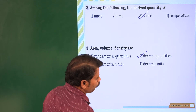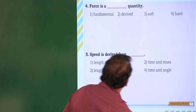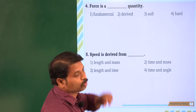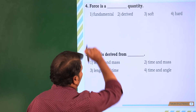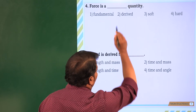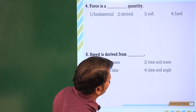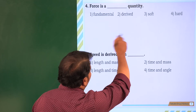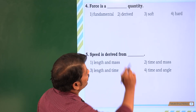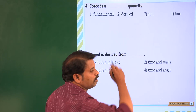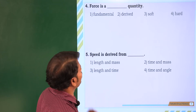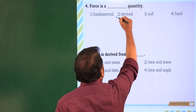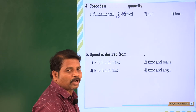Next, question 4: force is a dash quantity. The options are fundamental, derived, soft, and hard. Soft and hard are odd quantities here. Force is a derived quantity, so option 2 is correct.